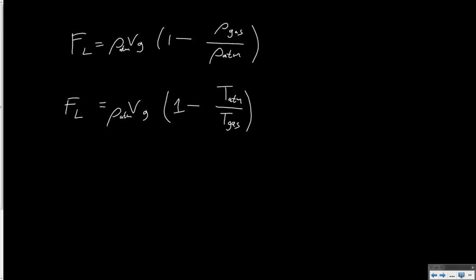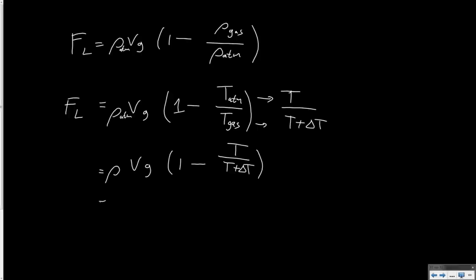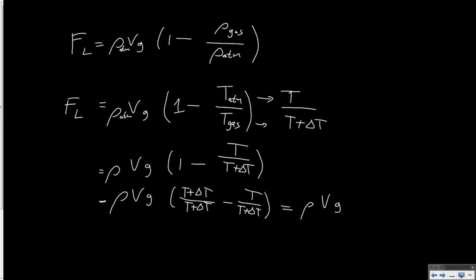Using a slightly different notation: the temperature of the gas is T plus delta T, where delta T is the temperature increase due to heating. We can then simplify: 1 minus T/(T + delta T) equals (T + delta T)/(T + delta T) minus T/(T + delta T), which results in delta T/(T + delta T). So F_lift = rho_atmosphere times V times g times delta T / (T + delta T).